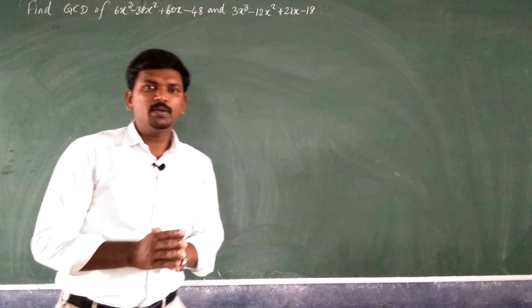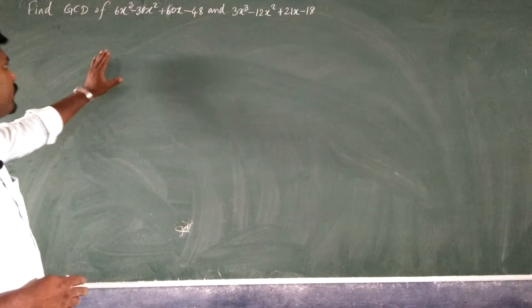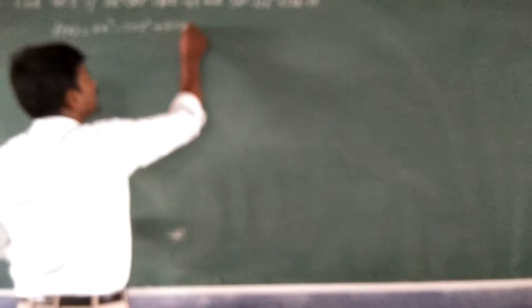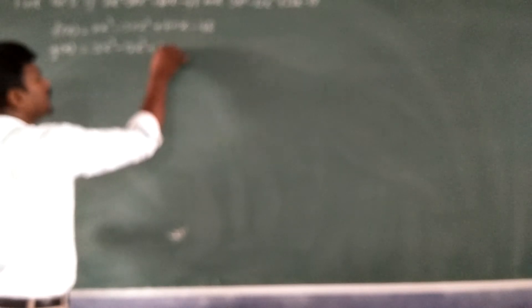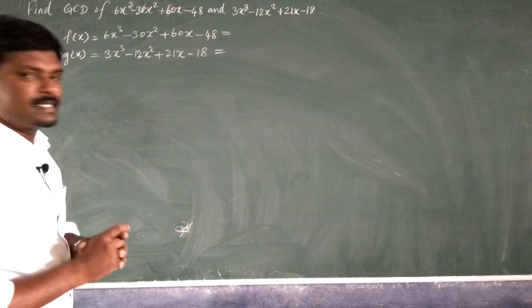Hello students. In this video we are going to see how to find the GCD of any two polynomials. First, write the given polynomials as f(x) and g(x). The first polynomial is 6x³ - 30x² + 60x - 48, and the second polynomial is 3x³ - 12x² + 21x - 18.